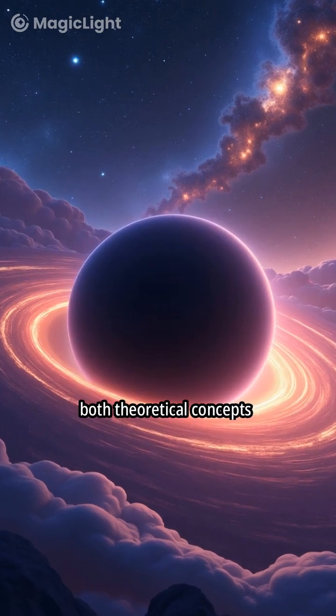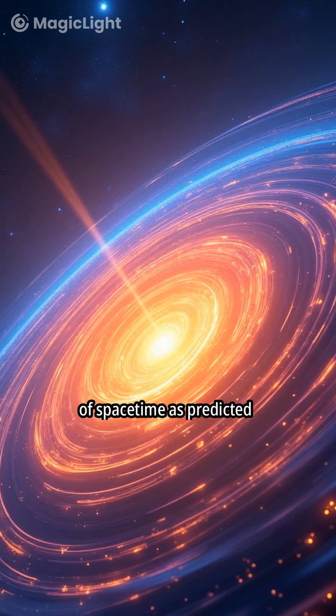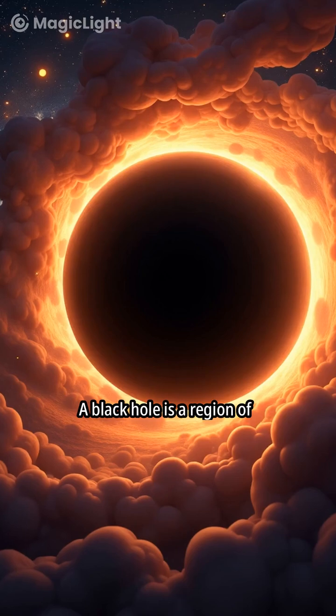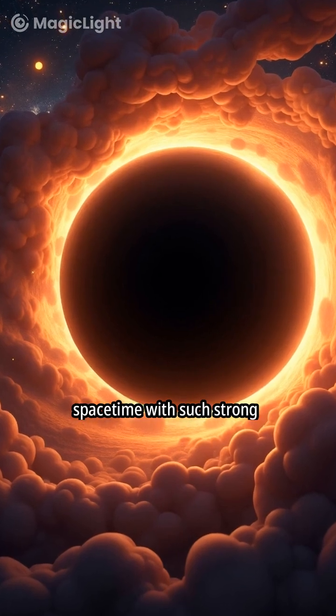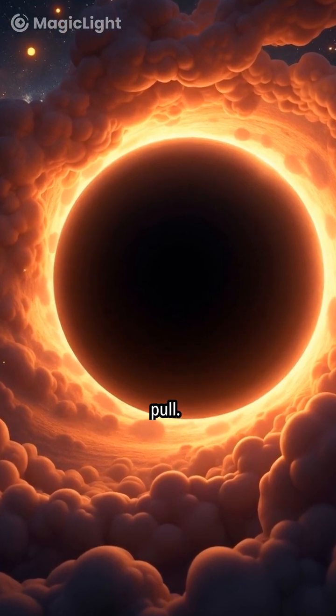Black holes and wormholes are both theoretical concepts in astrophysics. They represent extreme distortions of space-time, as predicted by Einstein's theory of general relativity. A black hole is a region of space-time with such strong gravity that nothing, not even light, can escape its pull.